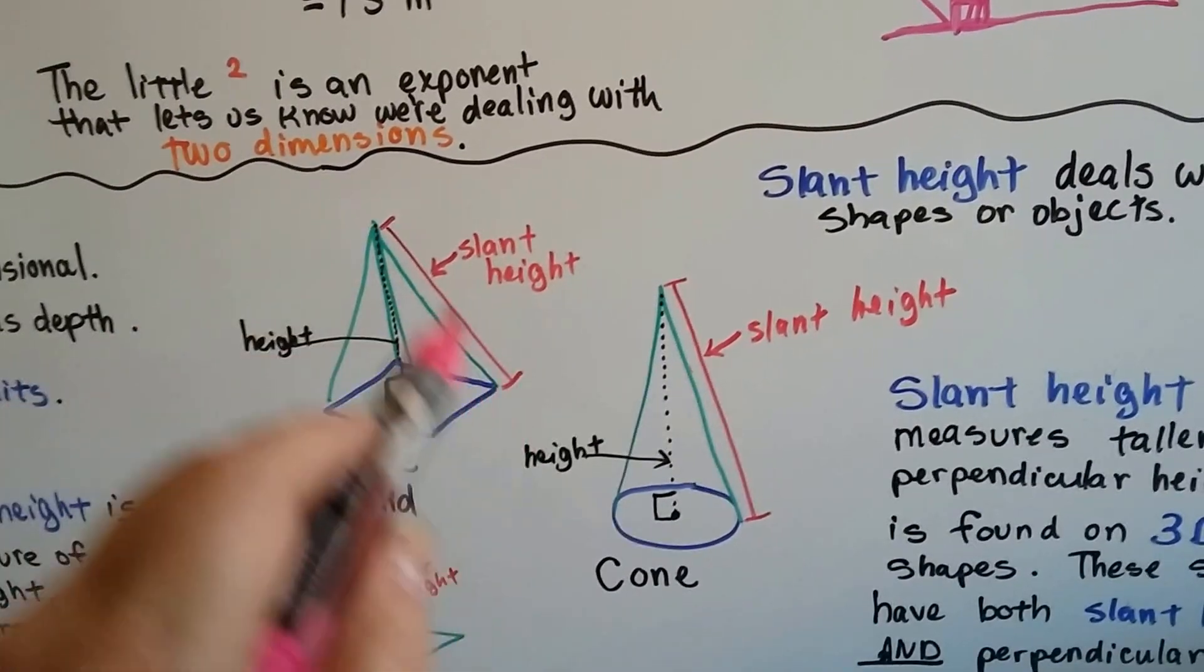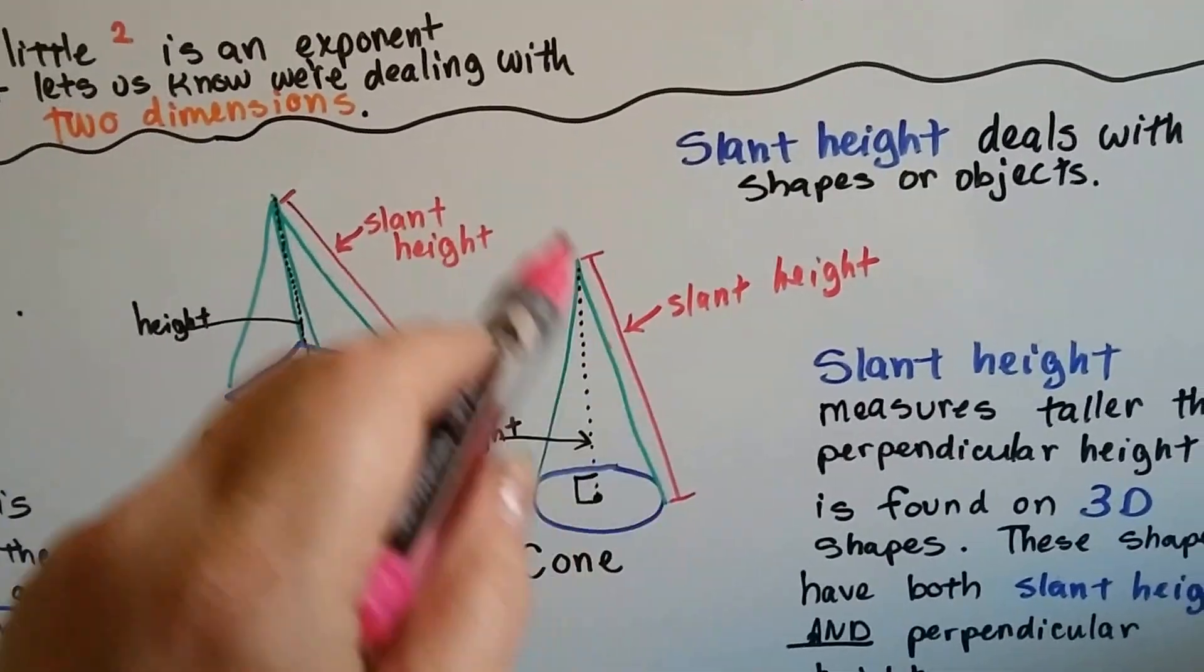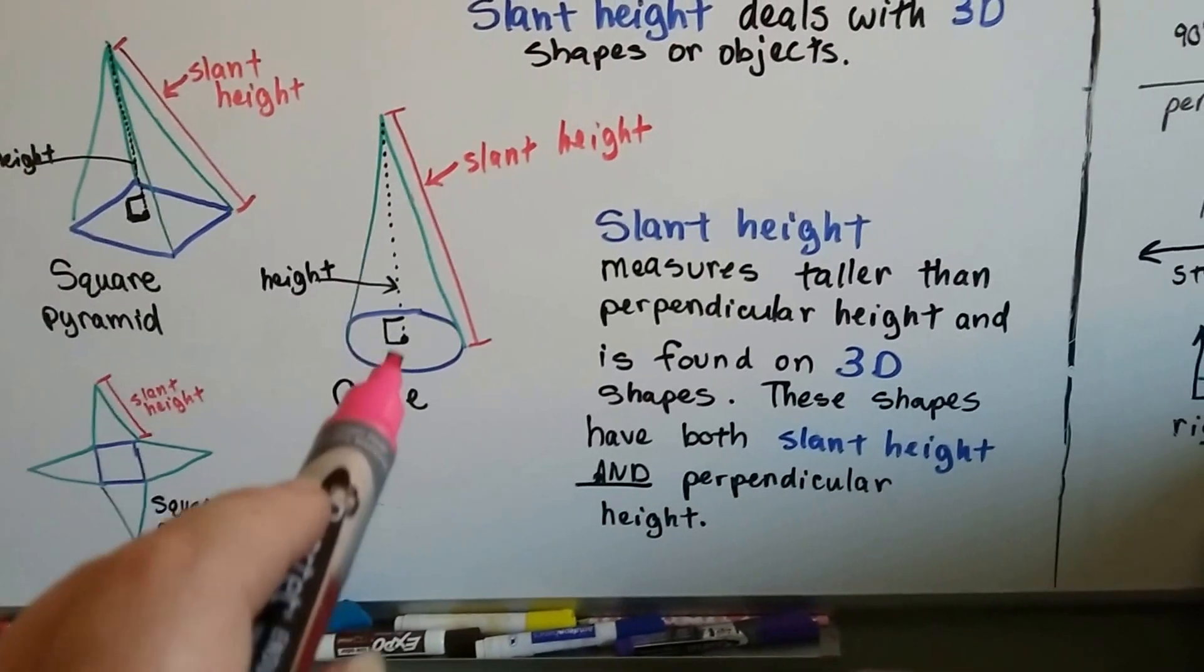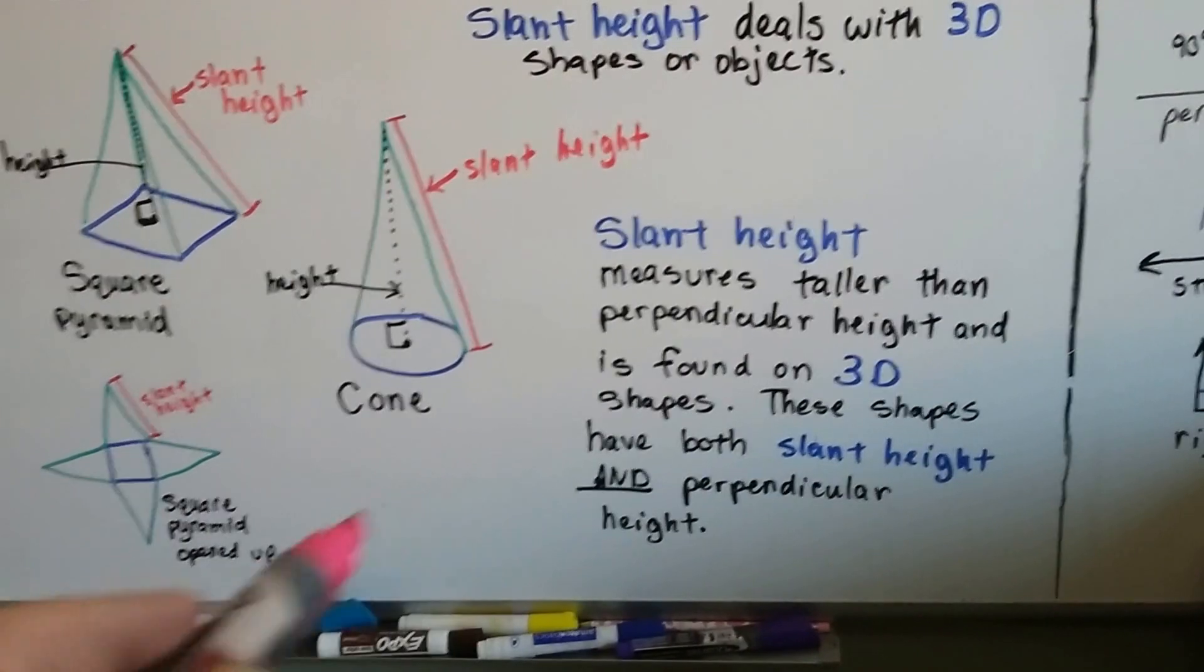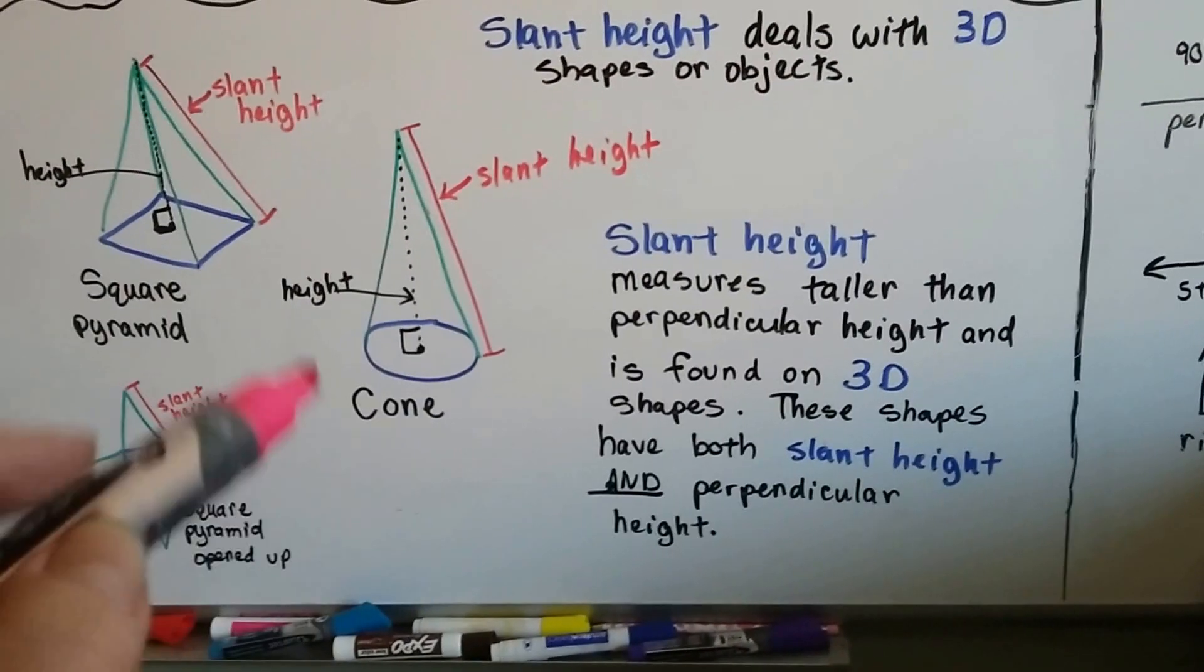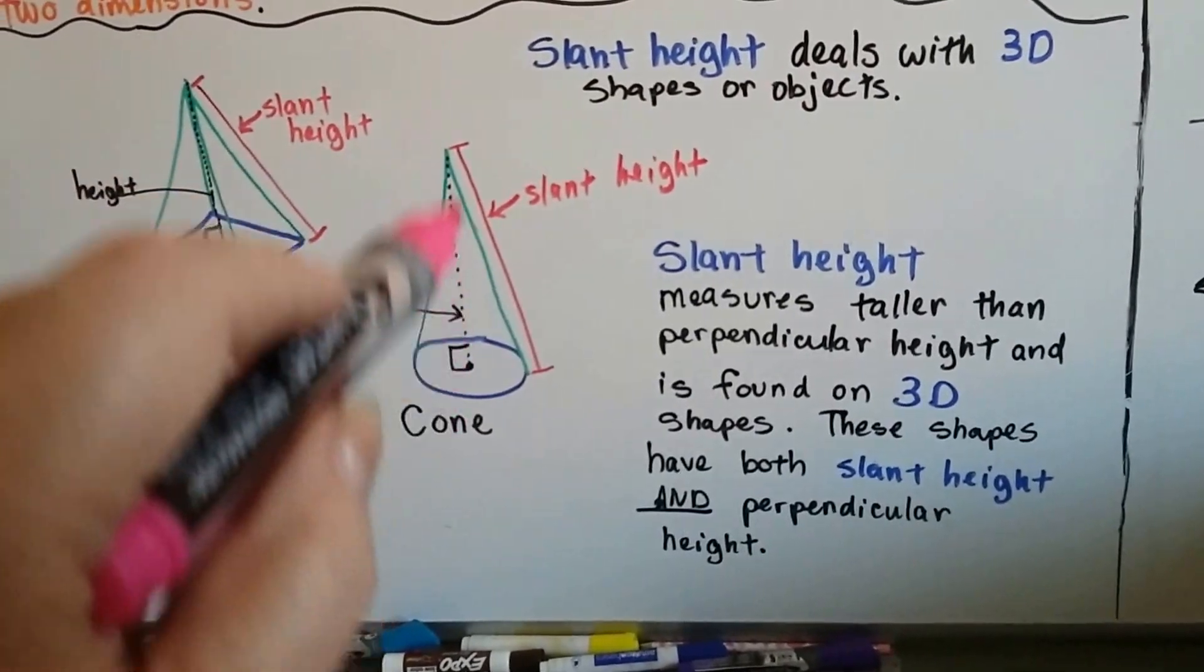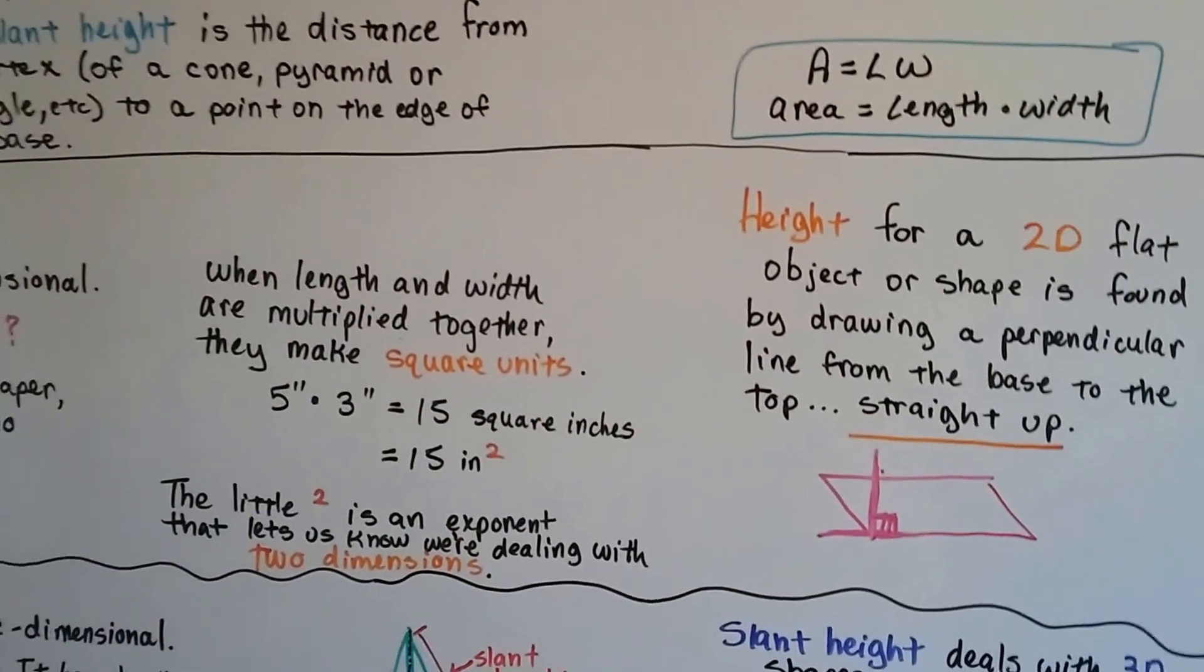But the slant height is on the face of it and it's slanted. That's slant height. And it measures taller than the perpendicular height. It's longer. And it's found on 3D shapes. These shapes have both slant height and perpendicular height. That's its slant height. And then the perpendicular height goes straight up. So don't confuse slant height with regular height.